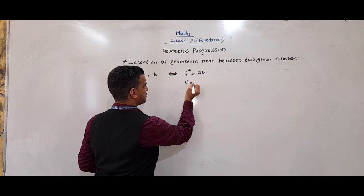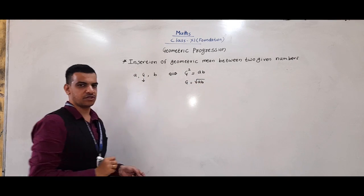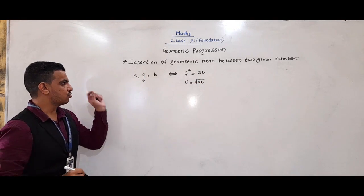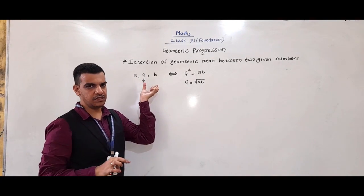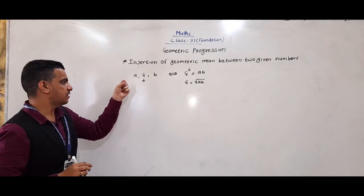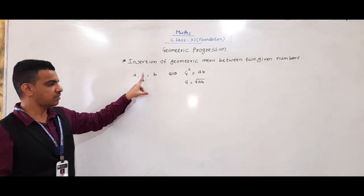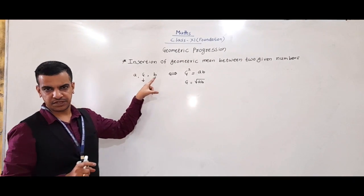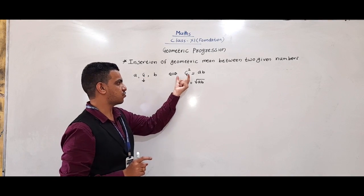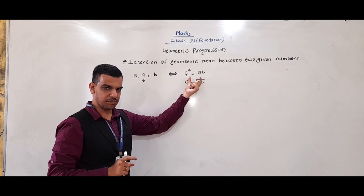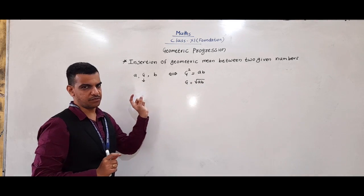Or we can write G = √(AB). So if A, G, B are in GP, then G is called the geometric mean of A and B, and we can write G² = AB, or G = √(AB).